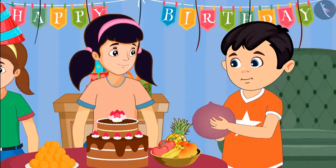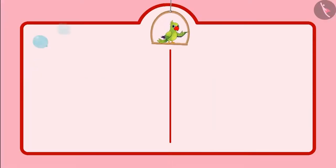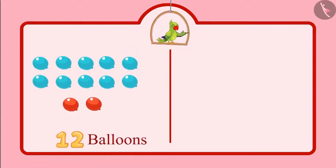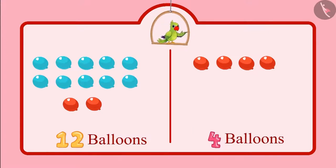Children, Neha blew 12 balloons and Choto blew four balloons. Can you tell me how many total balloons did Choto and Neha blow together? Let us see. First of all, Neha blew 12 balloons and Choto blew four balloons.